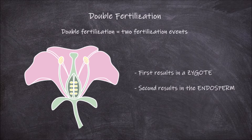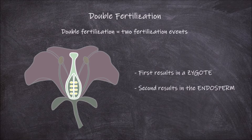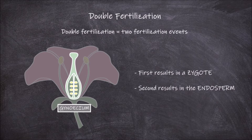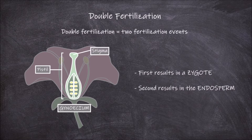Let's start with some general structure of the flower parts involved in this process. The female reproductive organs can be found in the innermost whorl of a flower, and are collectively called the gynoecium. The gynoecium is made up of one or more pistils. This flower we are looking at only has a single pistil. Each pistil consists of the stigma at the top, and the ovary at the bottom.